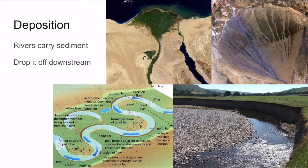We see this process occurring in the bottom right picture. Along the outer edge of the bend, material is being worn away — that's why we see the sheer cliff there. But on the inside, all of the load is going to be deposited. This will gradually change the course of a river over time and potentially produce landforms called oxbow lakes, as shown in the bottom left picture.